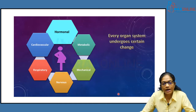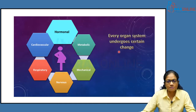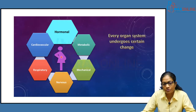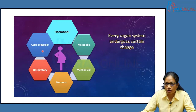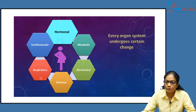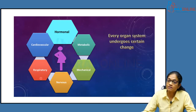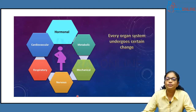Going back to physiology — a quick revision. Every organ system undergoes certain changes. Primarily, the woman has hormonal changes; there is a lot of progesterone and estrogen in the system, in association with the renin-angiotensin system. There are cardiovascular changes leading to fluid retention and increase in plasma volume. In the respiratory system, there is increased metabolic rate, increased oxygen consumption, and increased minute ventilation.